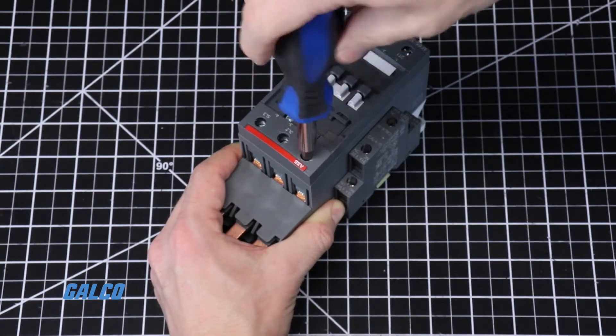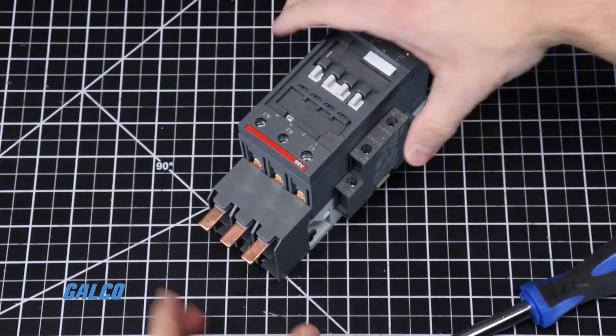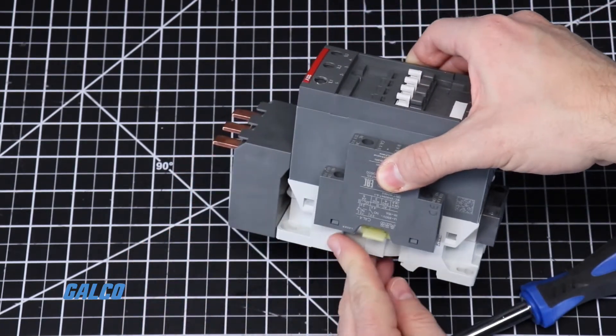If done correctly, the bus bar module should have a secure fit and lay flush with the contactor.